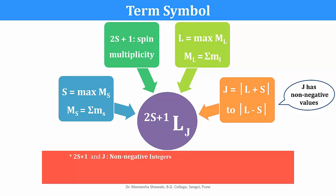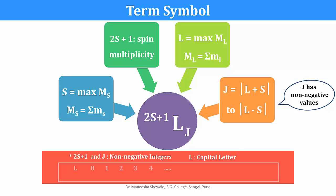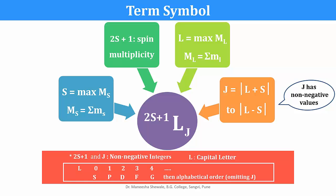When we write the term symbol, the values of 2S+1 and J are written as non-negative integers. For L, the value is represented by a capital letter. L can have values 0, 1, 2, 3, 4 and so on. For L=0 we write S; for L=1 it is P; for 2 it is D; and then F, G, and then in alphabetical order.